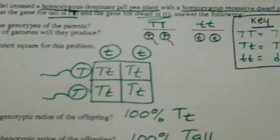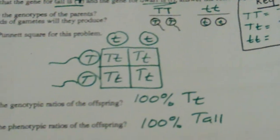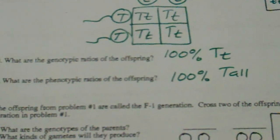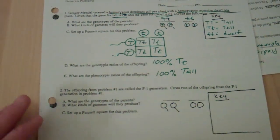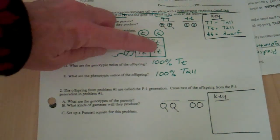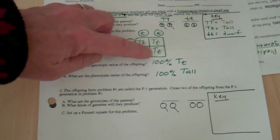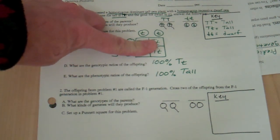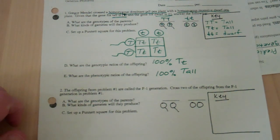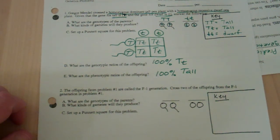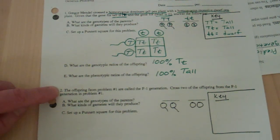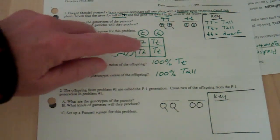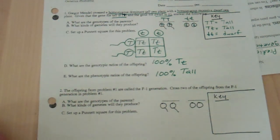The phenotypic ratio, what do our offspring look like? 100% of our offspring are tall. Now the next problem says the offspring from problem one are called the F1 generation. So these are your offspring from the first cross, this is called the F1 generation. Cross two of the offspring from the F1 generation in problem one.